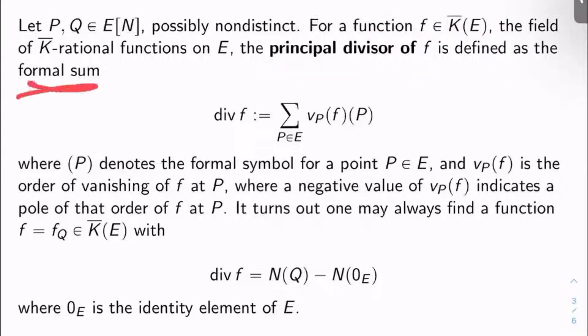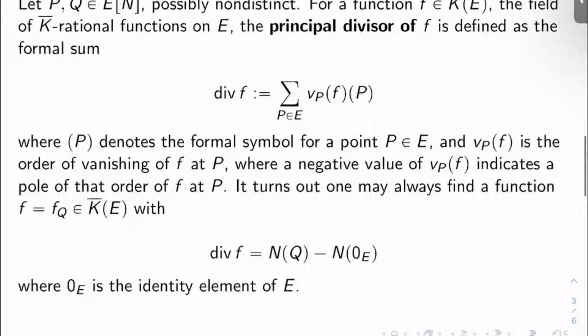If I take such a function f, I can make what's called the principal divisor of f. It's a formal sum written div f. And what it is, is it's trying to keep track of points on the curve where f vanishes, where f has poles, to what order and to what degree respectively. So what it is, is it's the sum over all points P in E of v_P(f) times this parentheses (P) symbol.